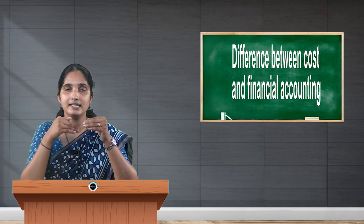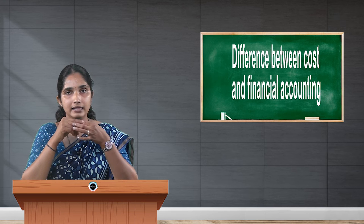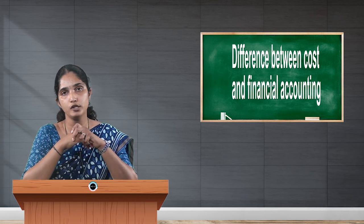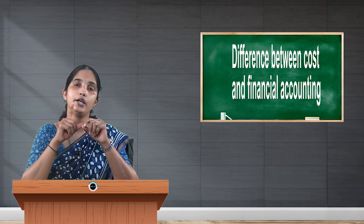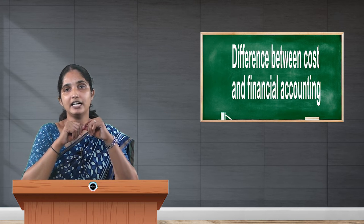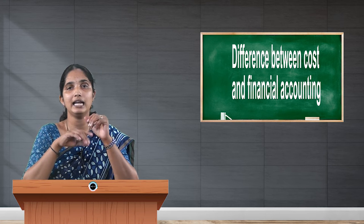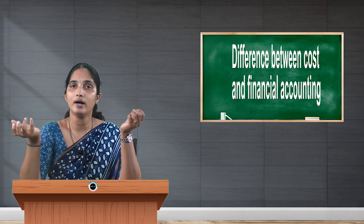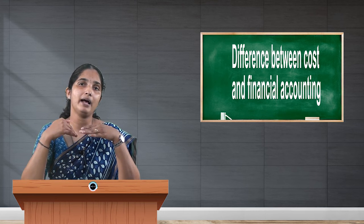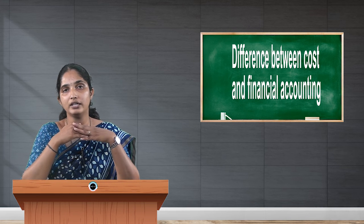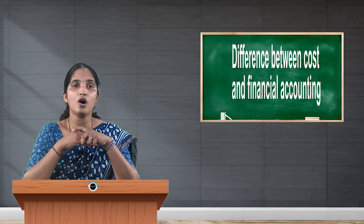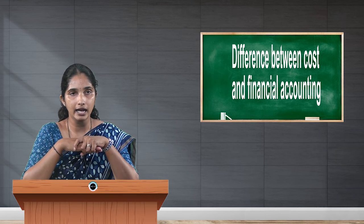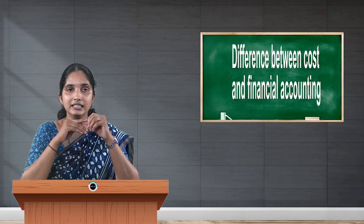Whereas under piece rate system, whether the worker logs in at 9:30 or 10:30, wages are decided based on the number of units produced. A rate per unit is fixed — for example, if the rate is rupees 10 per unit and the worker produces 100 units in a day, then 100 multiplied by 10 gives 1000 rupees. So the nature of information differs: financial accounting records only monetary transactions, whereas cost and management accounting records monetary as well as physical information.